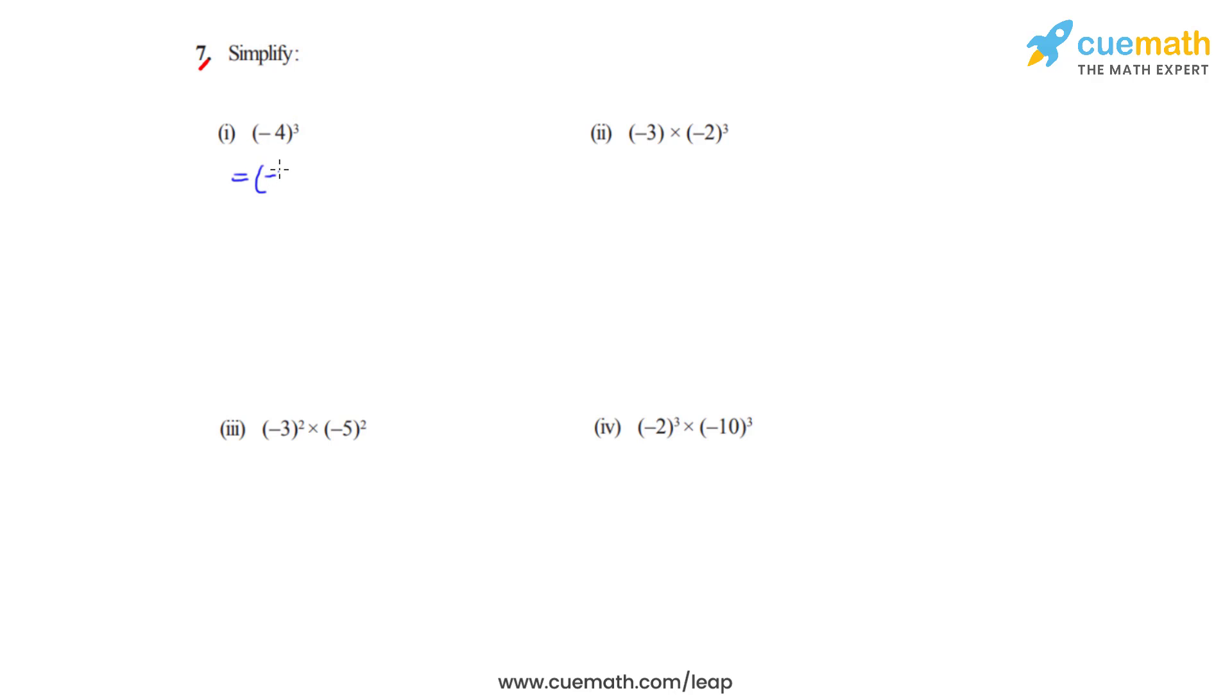That means negative 4 is multiplied three times. So we write it as negative 4 times negative 4 times negative 4.